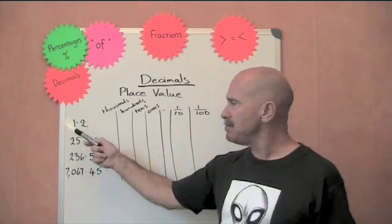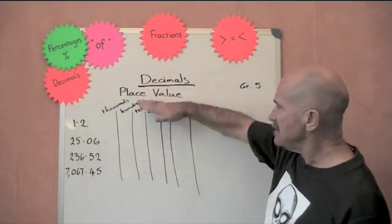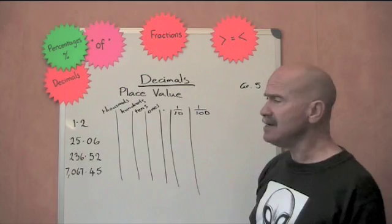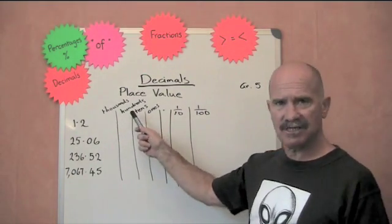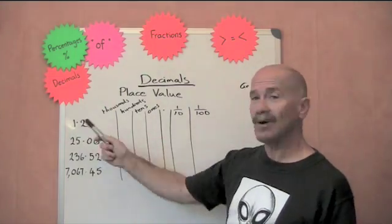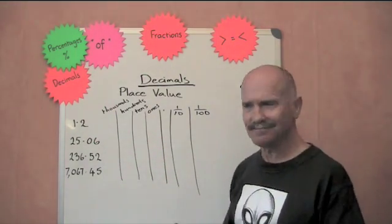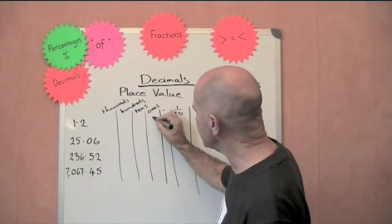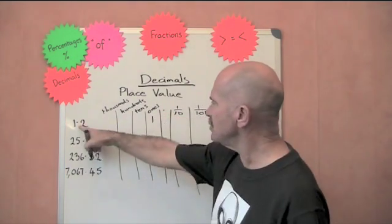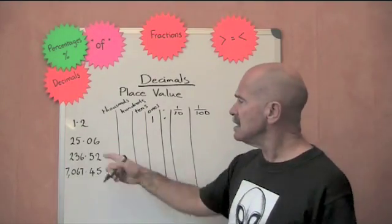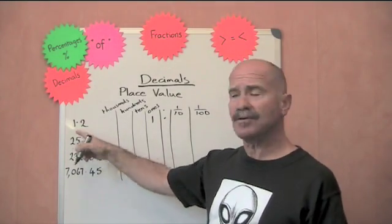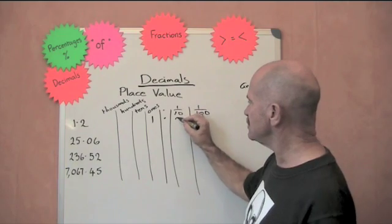1.2, if you had to put 1.2 into the columns here, we don't have any thousands, we don't have any hundreds, we don't have any tens. We've got a 1. How about that? So put the 1 there. The decimal point goes under the decimal point, of course. And the first number after the decimal point is a tenth. So that goes there.